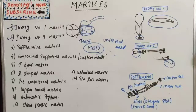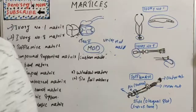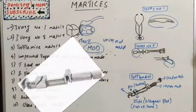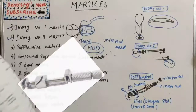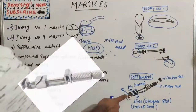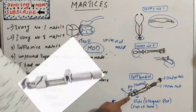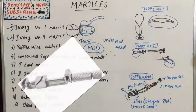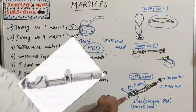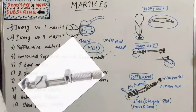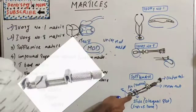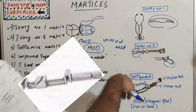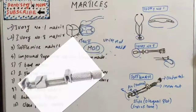Now let's move to the parts of Toffelmyer, which is very important. The head part accommodates the matrix band — it is U-shaped with two slots. The open side of the head should be facing gingivally when the band is placed around the tooth. The second part is the slide, which is a diagonal slot — the ends of the band are engaged to this diagonal slot.